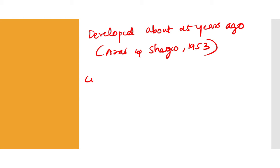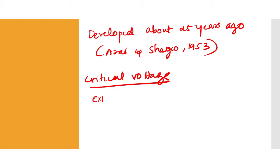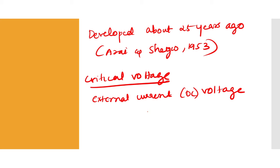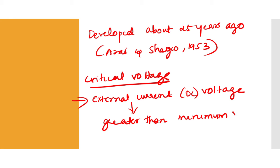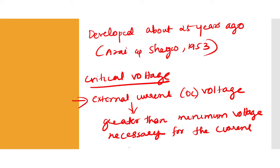The critical voltage is different for different metals. When we are applying an external DC voltage, it is adjusted to be greater than the minimum voltage necessary for the current to flow.